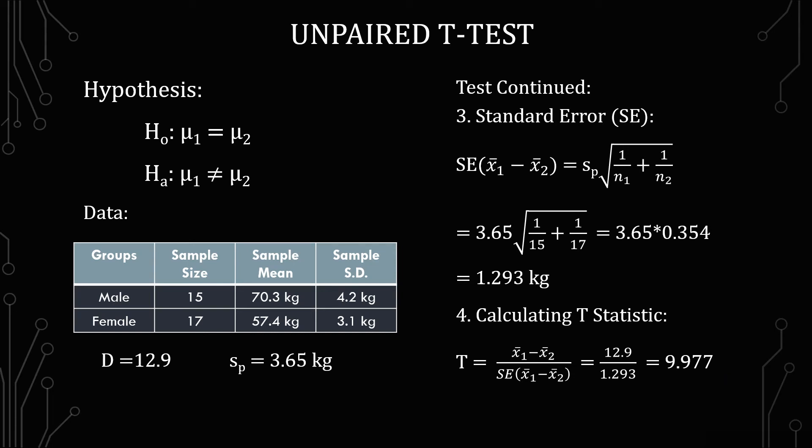Now because it's a t test we have to also do degrees of freedom. And so the degrees of freedom calculation is n1 plus n2 minus 2 which we've seen that before under the pooled standard deviation. So it's the first group size plus the second group size minus 2 and that gives us 30.